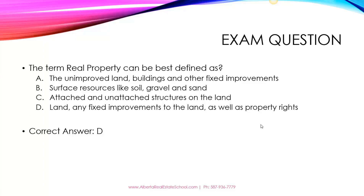When we break this down, first we have land, which is raw land — anything above it and below it. Then we have real estate, which is either unimproved land or land with buildings and other fixed improvements. Then the next term, which is all encompassing, is real property: land, any fixed improvements to the land, as well as property rights — a bundle of rights. All of those things together form real property.